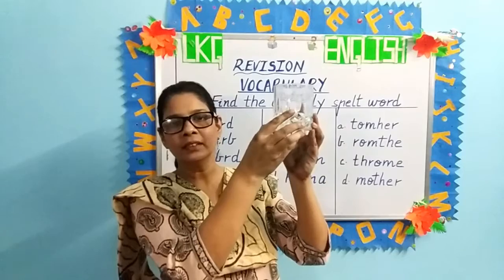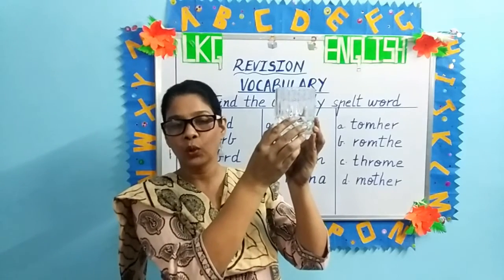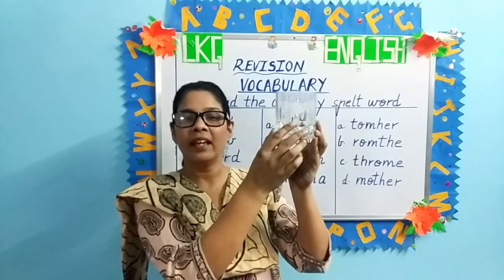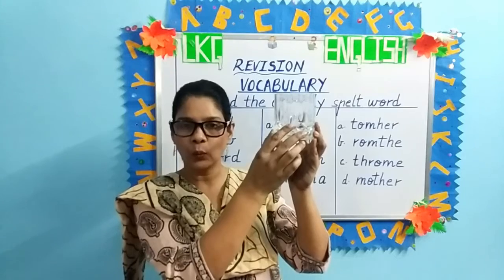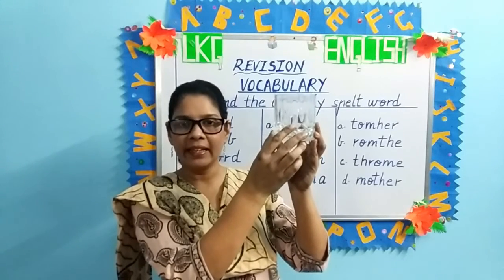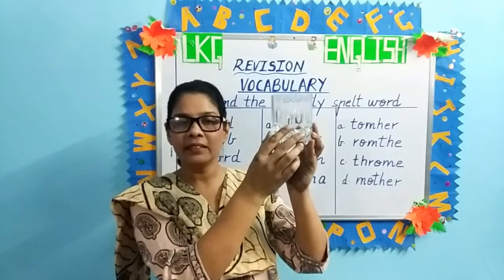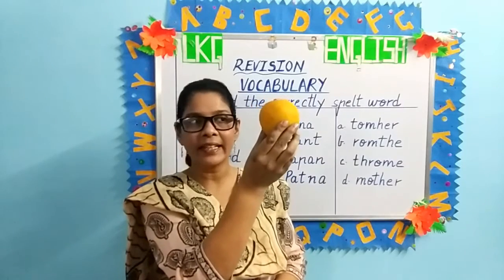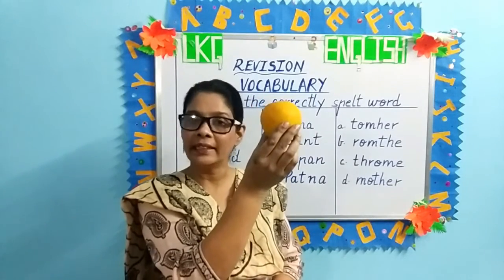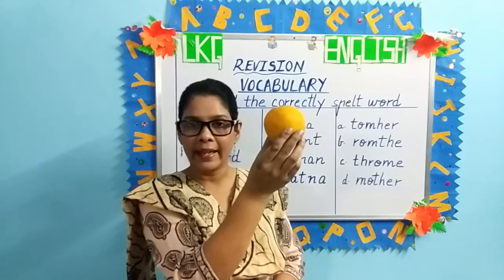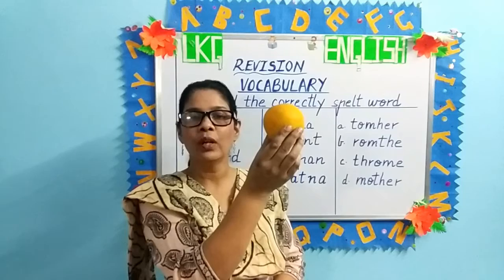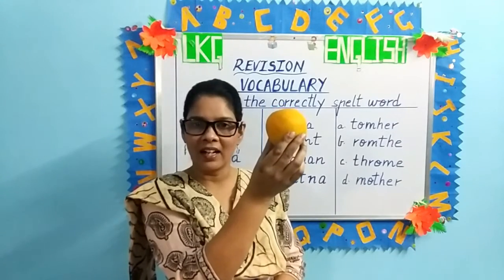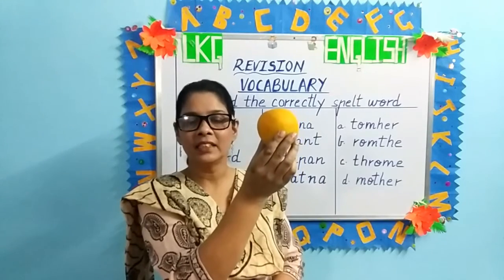What is this, children? It's a glass. What is the spelling of glass? G-L-A-S-S, glass. Once again, G-L-A-S-S, glass. And what is this, children? Right, it's a fruit — an orange. Spell fruit. F-R-U-I-T, fruit. F-R-U-I-T, fruit.